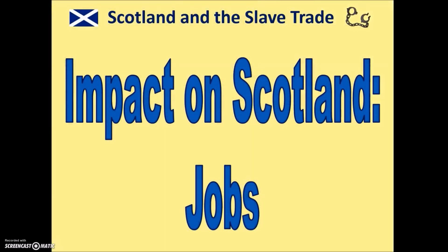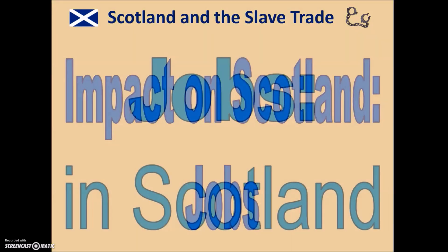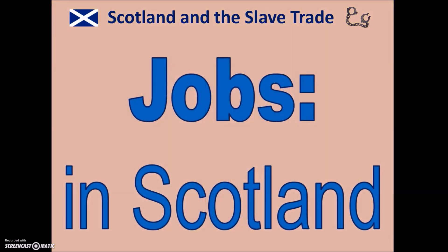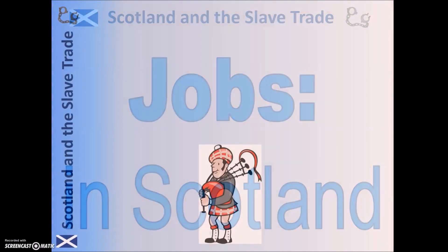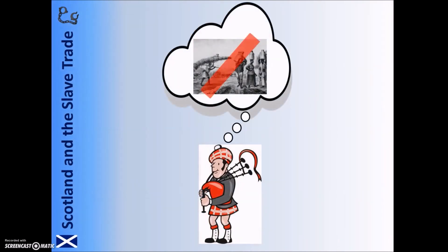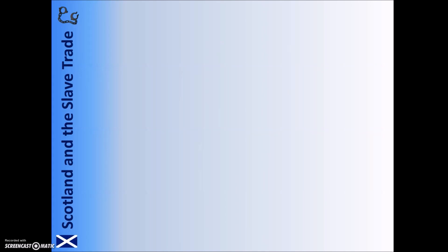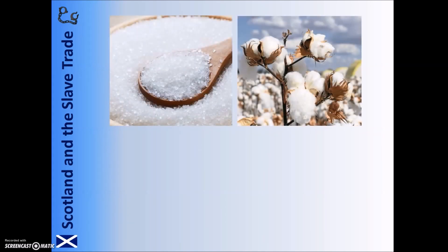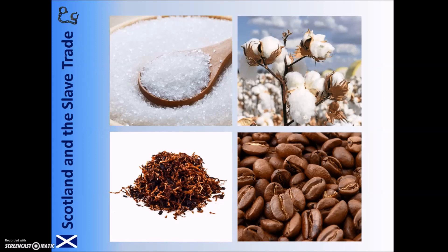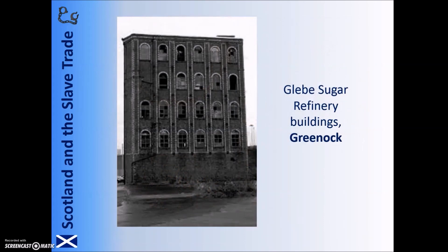Scotland's involvement in the slave trade wasn't simply about those who became rich — many people simply found they had jobs as a result of the trade. Many people in Scotland would never have met a slave or perhaps even known the story of slavery, but their jobs still existed because of the slaves' work. Various products were grown and made by slaves, in particular sugar, cotton, coffee, and tobacco, which were brought to Scotland and used in various ways. There were sugar refineries around Scotland, including in Ayr and Greenock, where workers boiled the sugar until it was ready for sale.